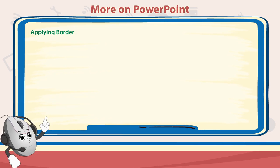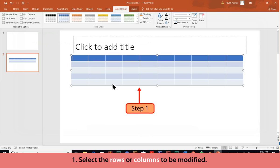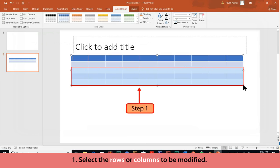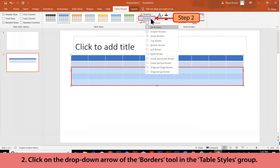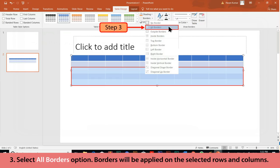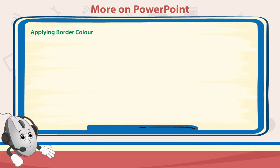Applying Border: Follow these steps to apply a border on the table. Select the rows or columns to be modified. Click on the drop-down arrow of the Borders tool in the Table Styles group. Select the All Borders option — borders will be applied on the selected rows and columns.